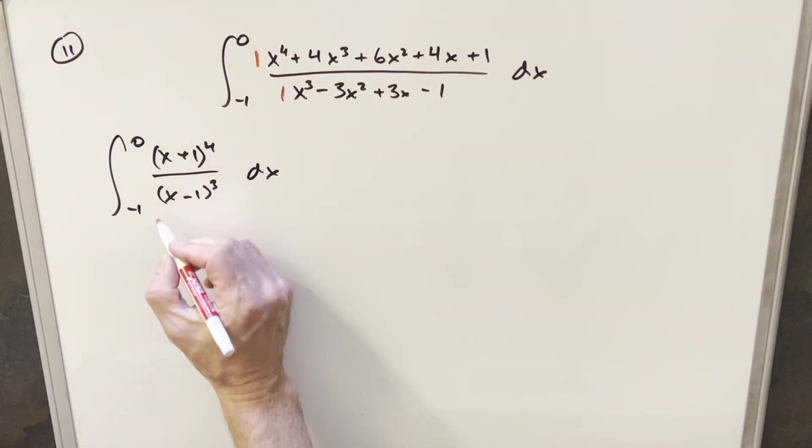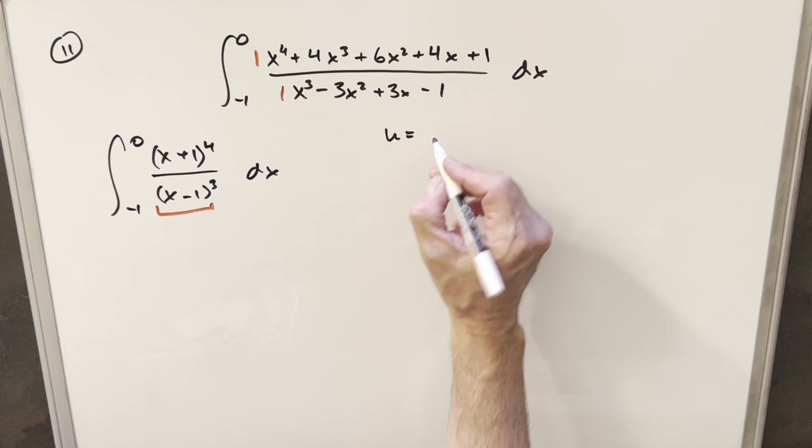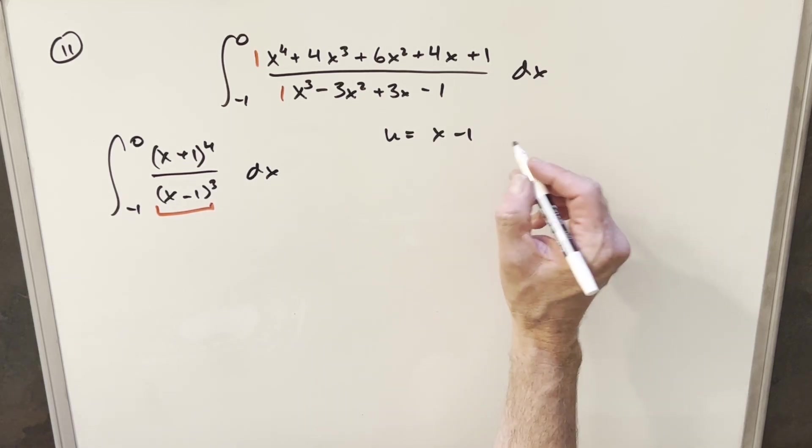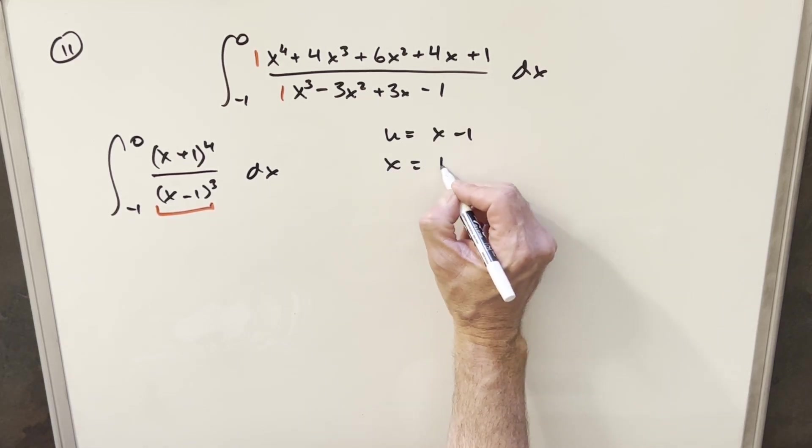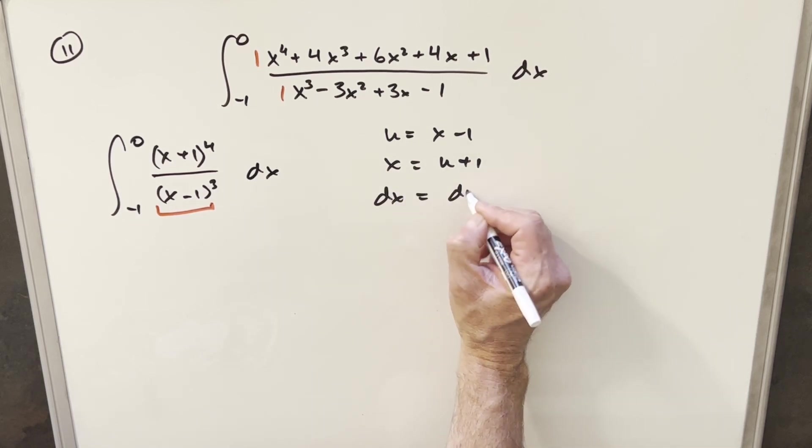And then at this point for my next step, what I did is a u substitution. What I want to do is simplify the denominator so then I could divide it into the numerator. And to do that, for my u sub, I'm going to just do u equal to x minus 1. We can get a value for x. x is going to be u plus 1. And then of course, taking the derivative on both sides, dx is going to be equal to du.